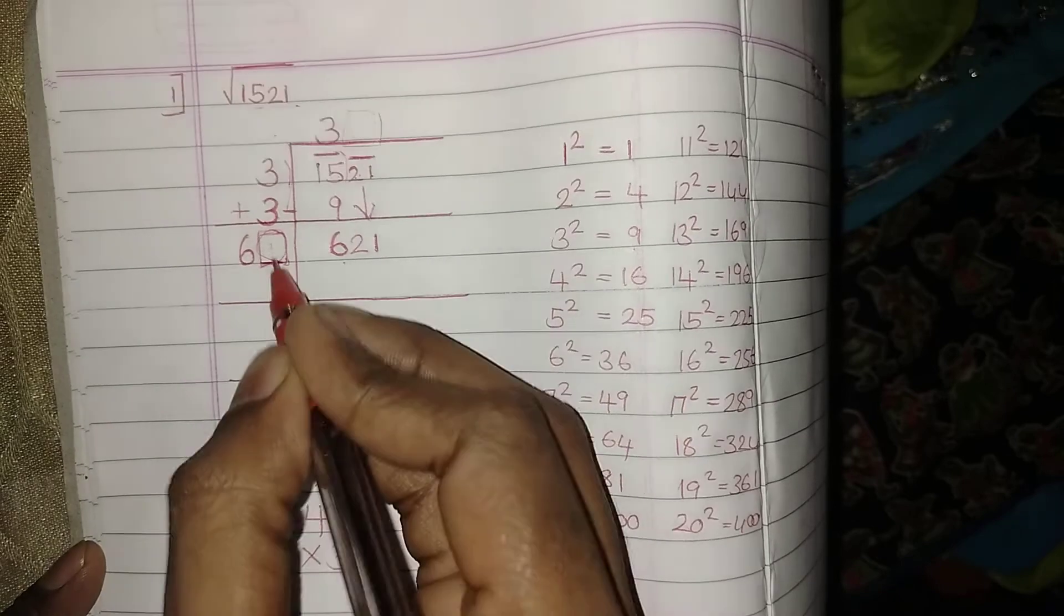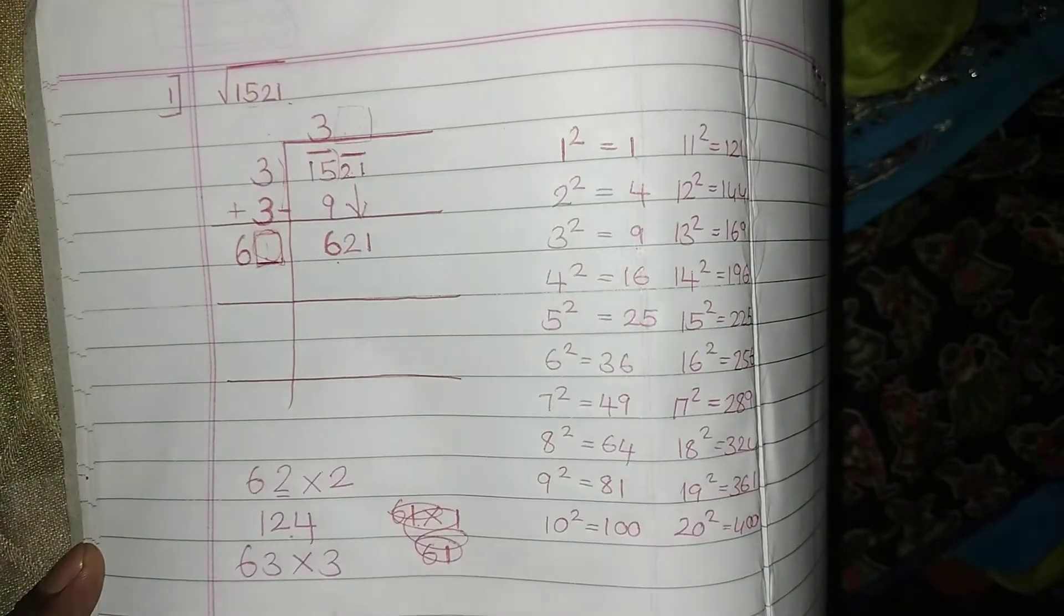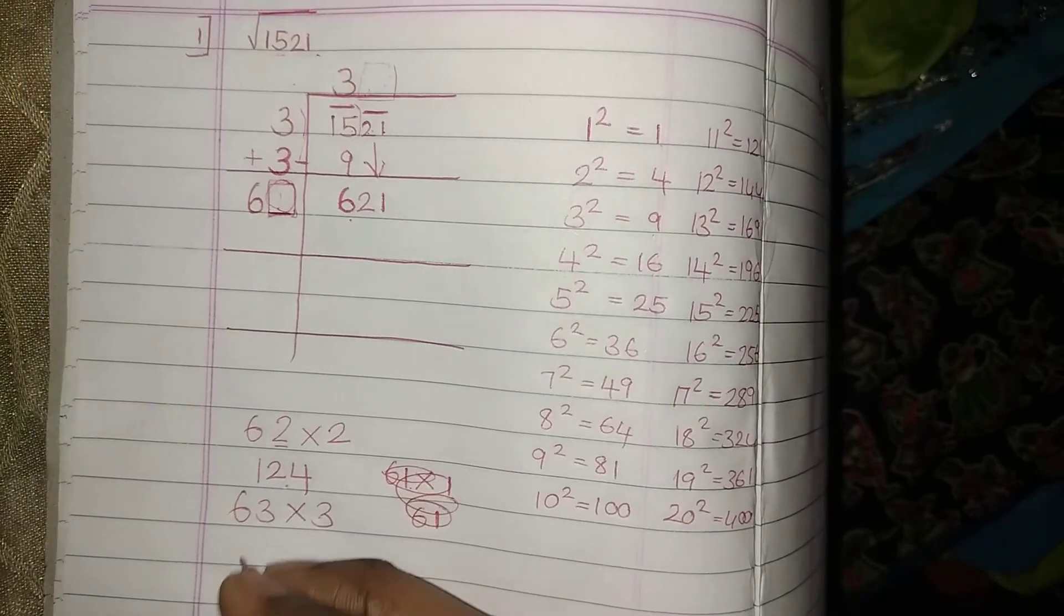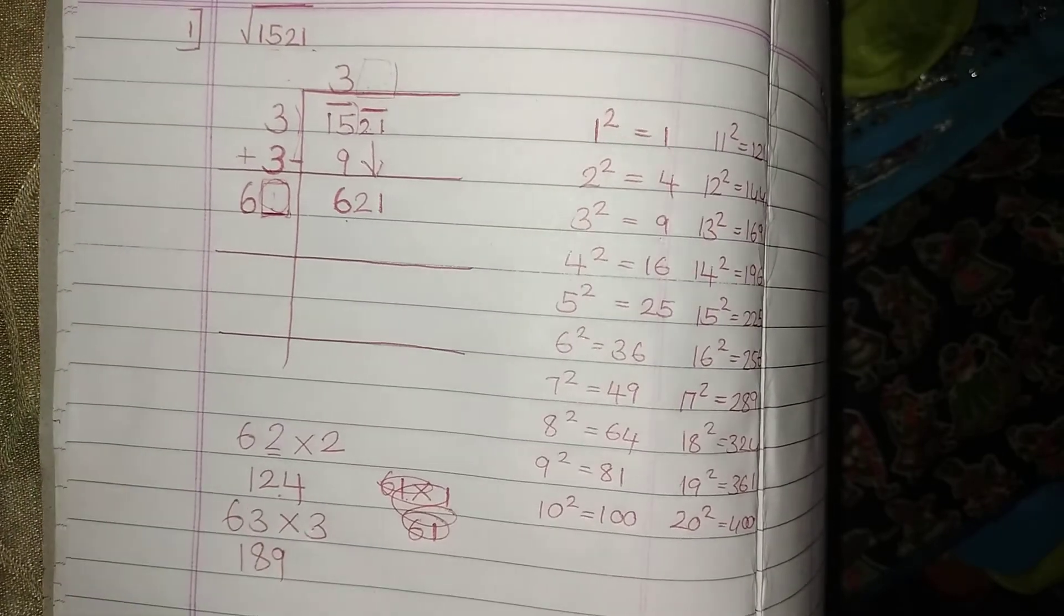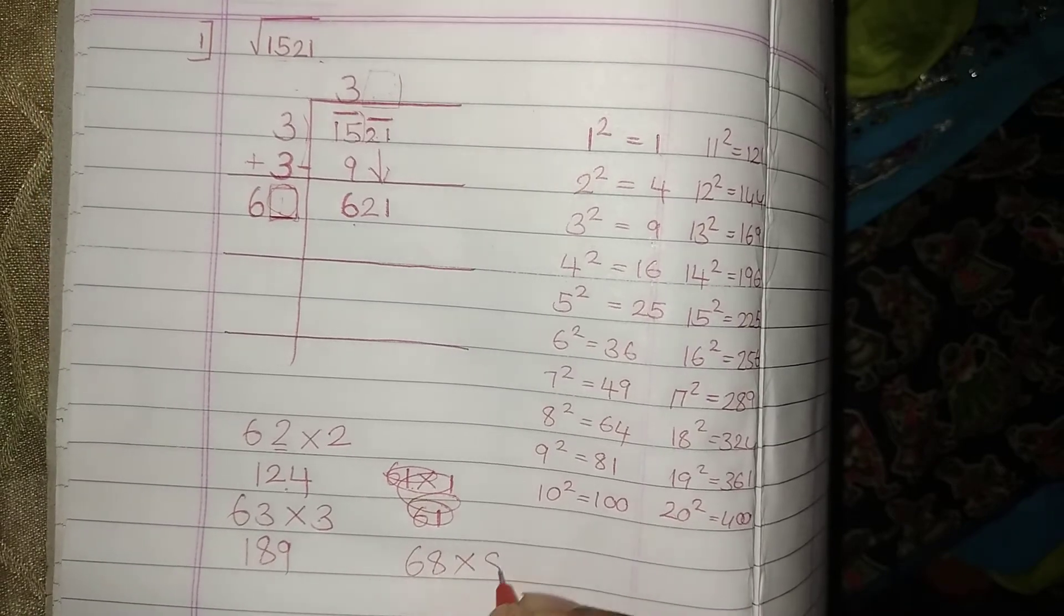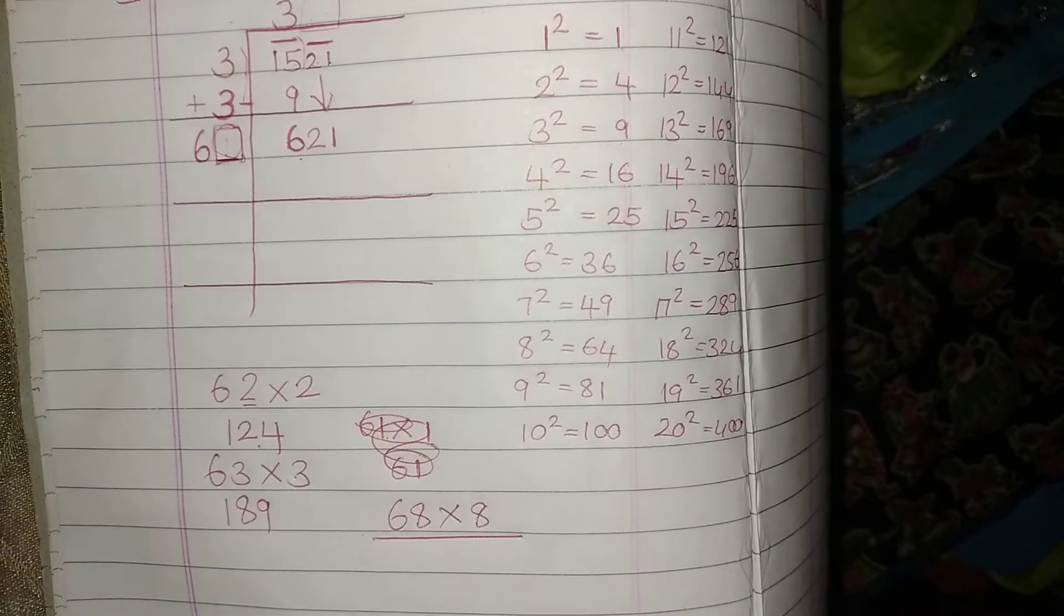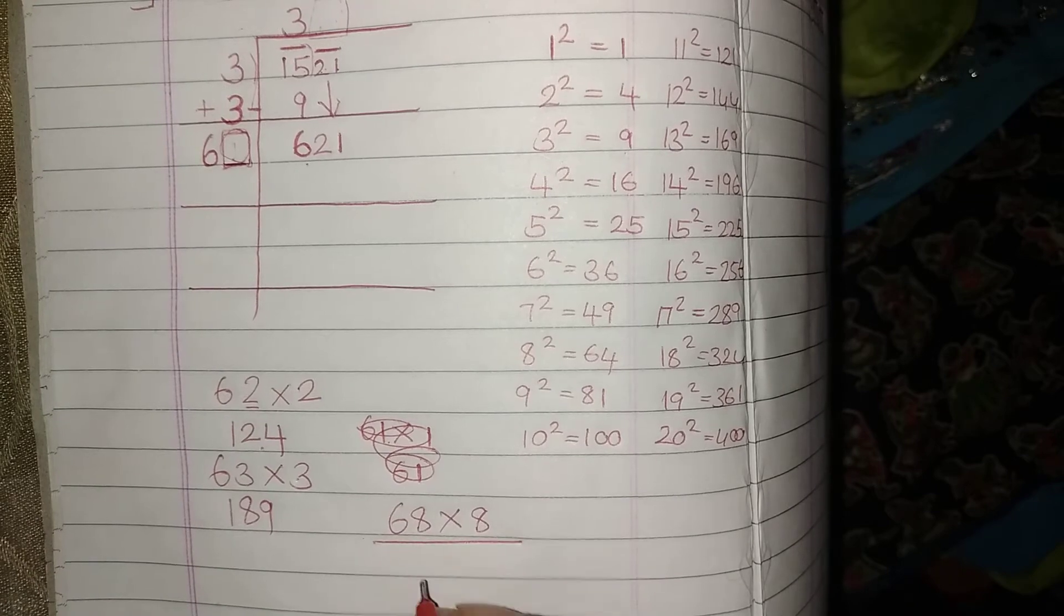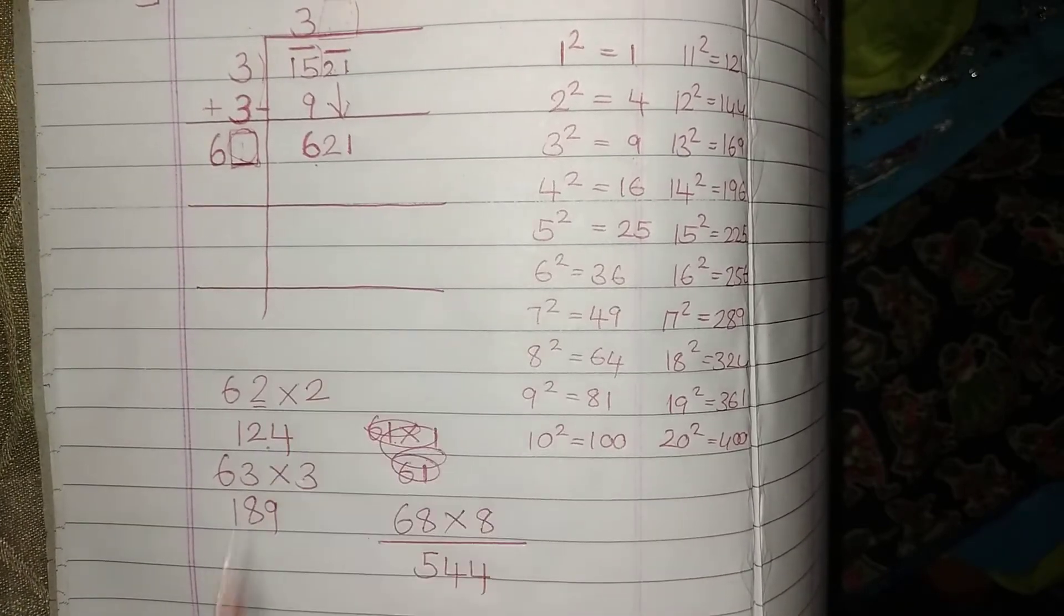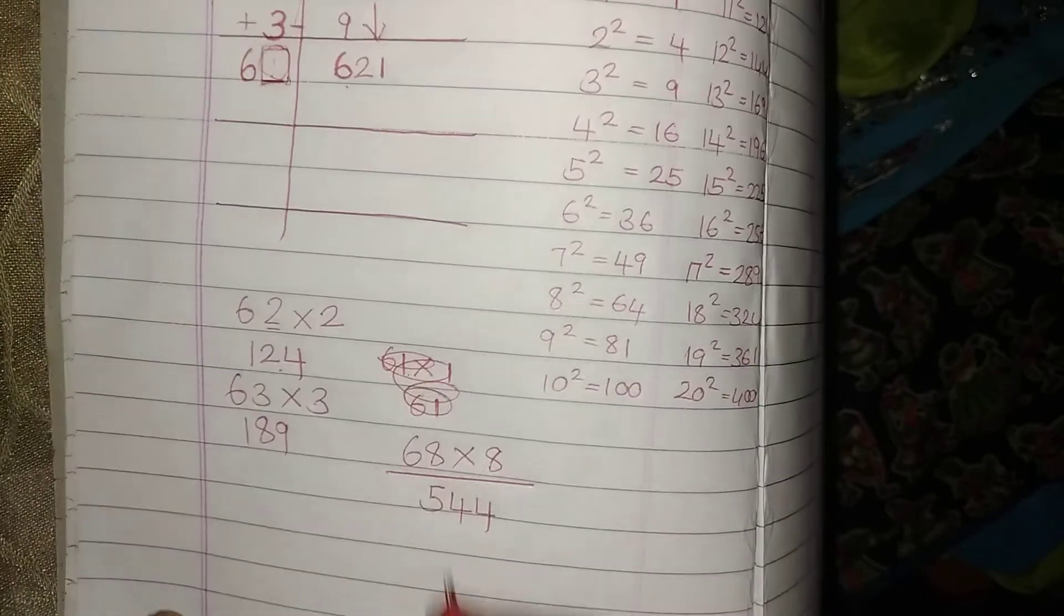If I put 3, same number should be another multiplicand. 63 into 3 is how much? 63 into 3 is 189. Like such we should go on checking. Let me go with 68 into 8, what is 68 into 8? Now it would be 544, which is little bit closer to 621.